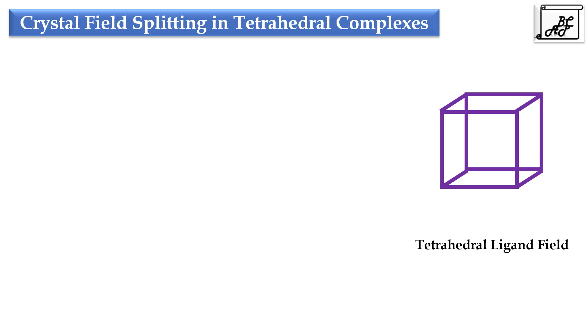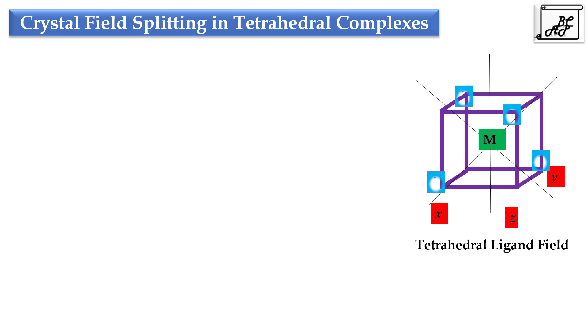In the first lecture of Bonding in Coordination Compounds, we have seen the crystal field splitting in octahedral complexes. In case of tetrahedral ligand field, the metal is at the center and the ligands are between the axis. In case of octahedral ligand field, the ligands are along the axis, but in case of tetrahedral ligand field, the ligands are placed between the axis.